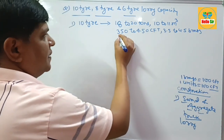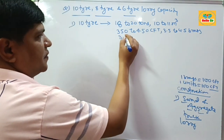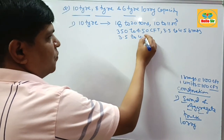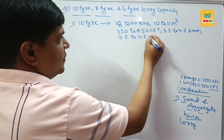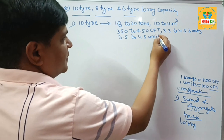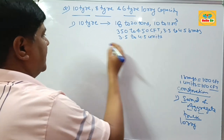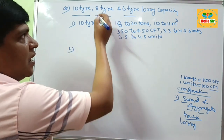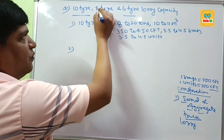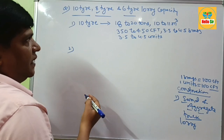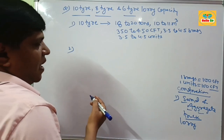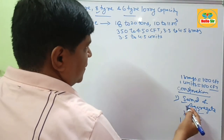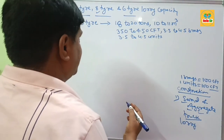And in units, it can be 3.5 to 4.5 units of sand and aggregate that can be hauled by a 10-tire truck. Now, if the truck has 8 wheels or 8 tires, how much sand and aggregate can be hauled by this one?